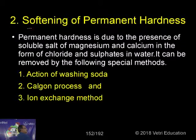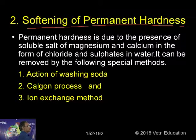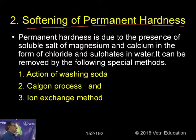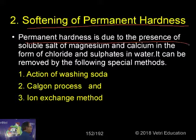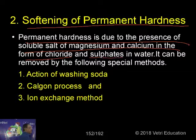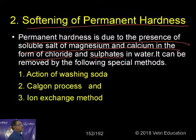Now, softening of permanent hardness. Permanent hardness is due to the presence of soluble salts of magnesium and calcium in the form of chloride and sulfate. Temporary hardness is due to bicarbonate; permanent hardness is due to chloride and sulfate of calcium and magnesium.